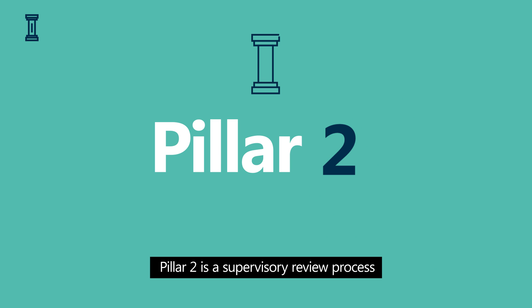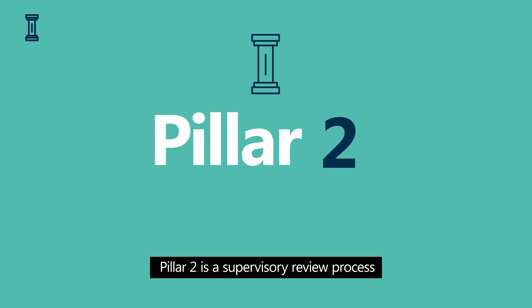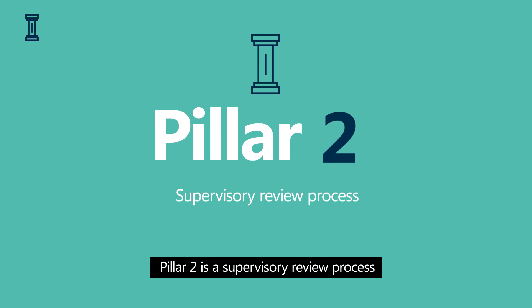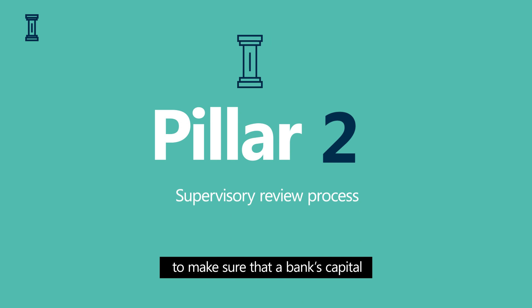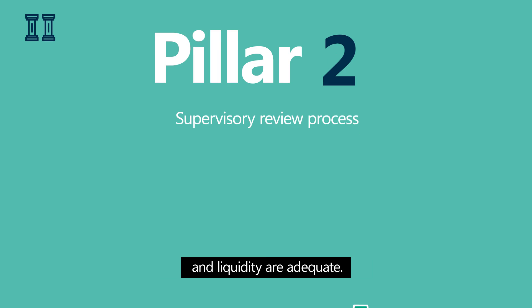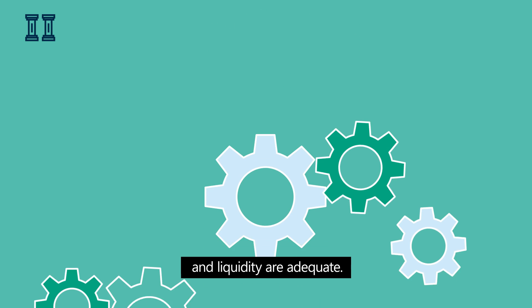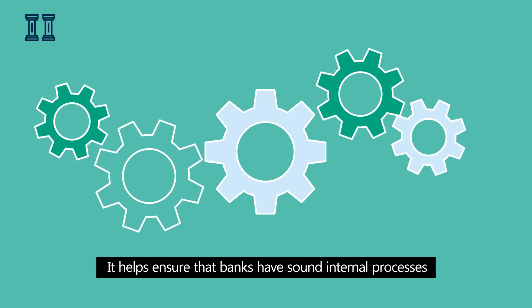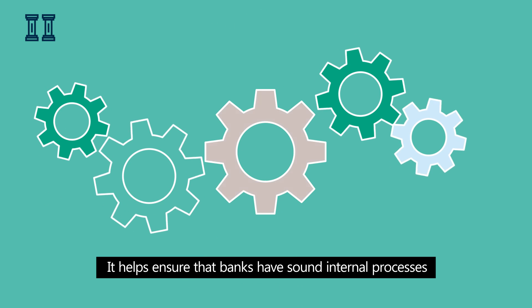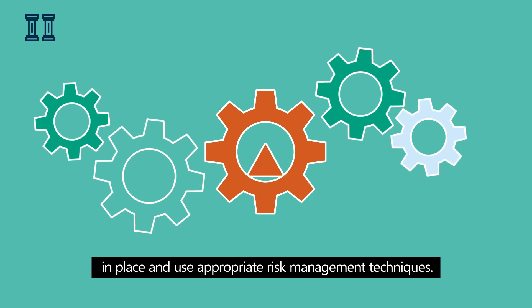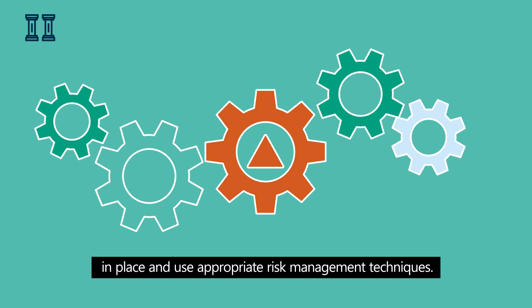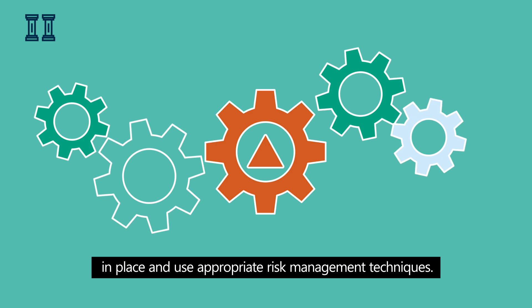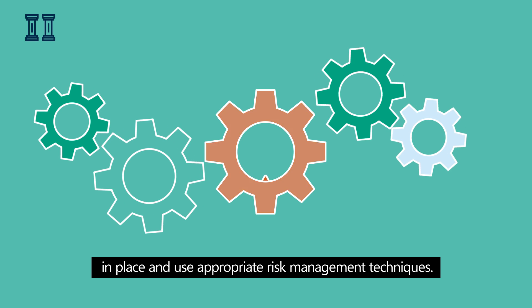Pillar two is a supervisory review process to make sure that a bank's capital and liquidity are adequate. It helps ensure that banks have sound internal processes in place and use appropriate risk management techniques.